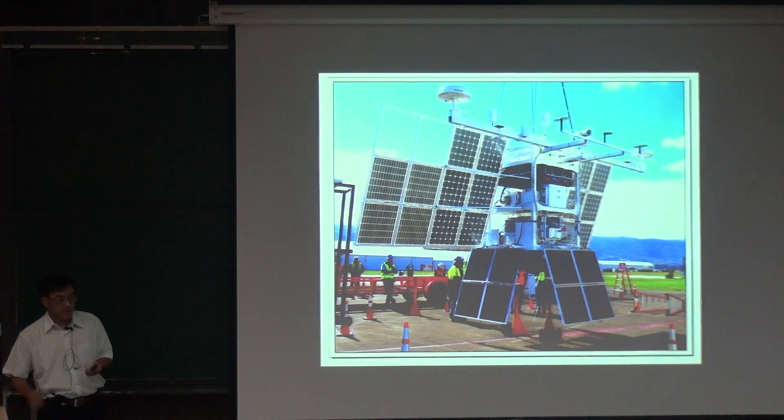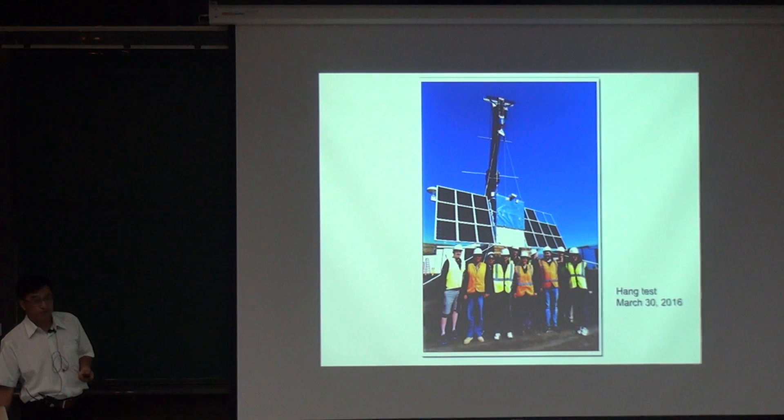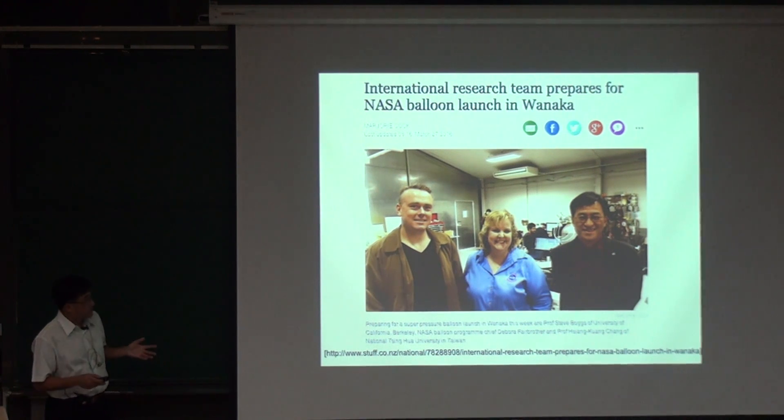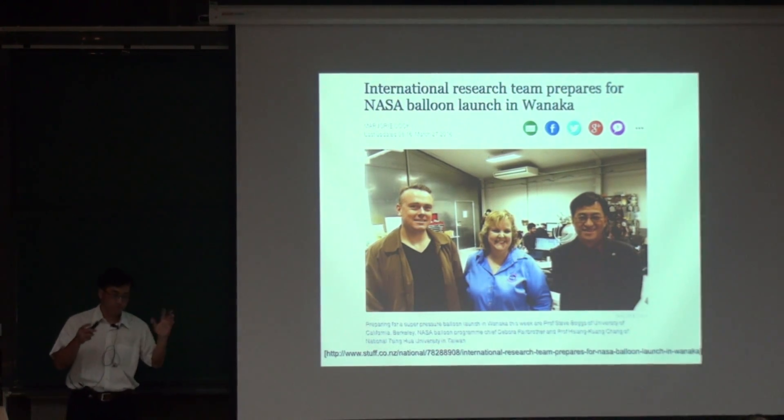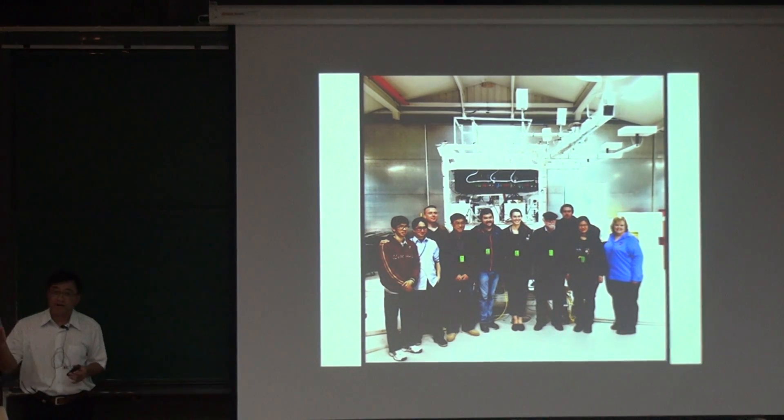So finally, this is a so-called hang test. Another time, we weigh. We also weigh the whole gondola, and then we check the power, whether the power is working okay or not. And then, see the crane. Hang test. And then, pictures. You cannot recognize who is who, right? And also, local media was also quite interested in our mission. So this is from local media. Some media called Stuff. Stuff in New Zealand. And so they take pictures. This is Steven Boggs. This is me. And this is someone from NASA. She is head of the balloon program. And this is the team there.